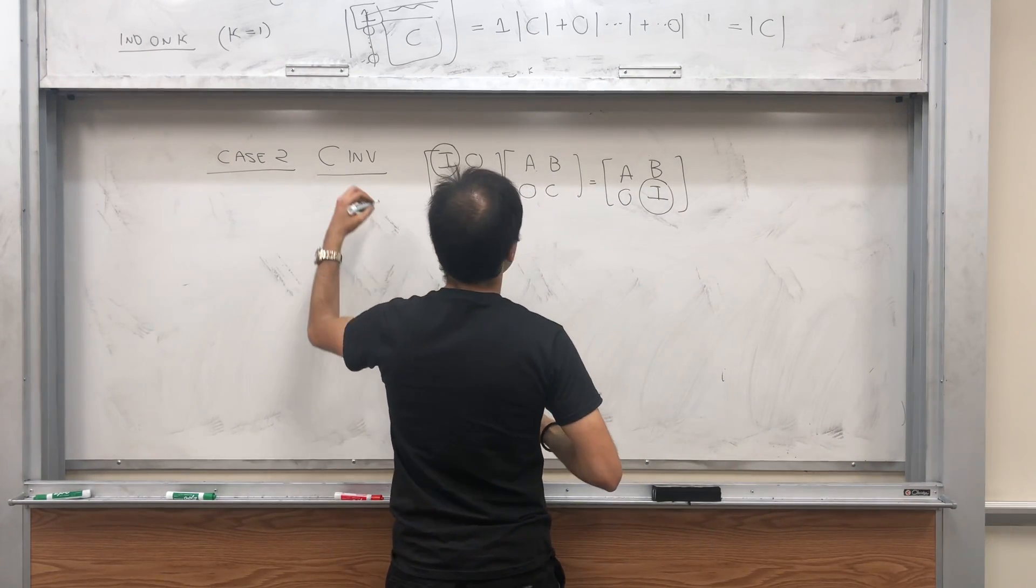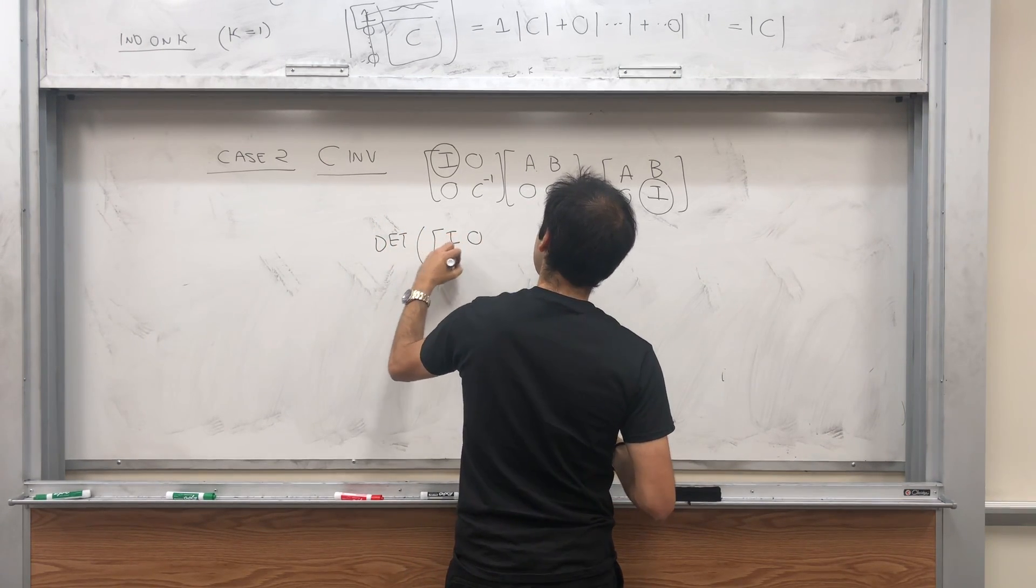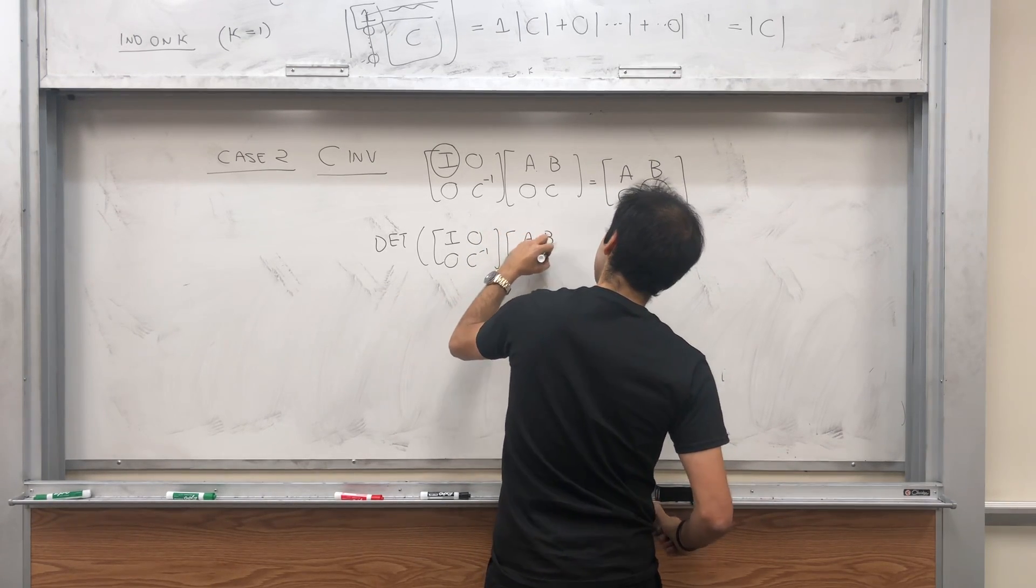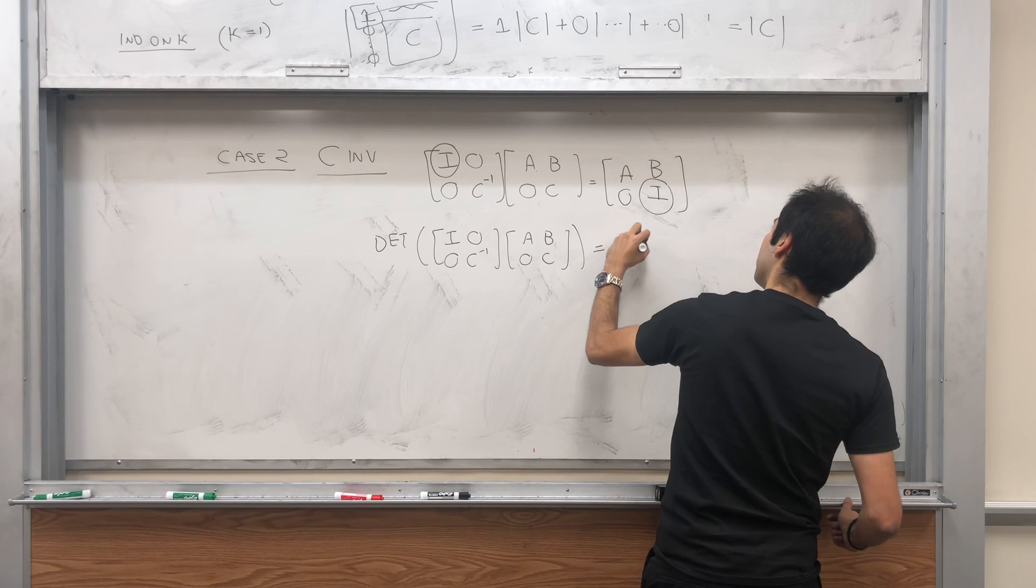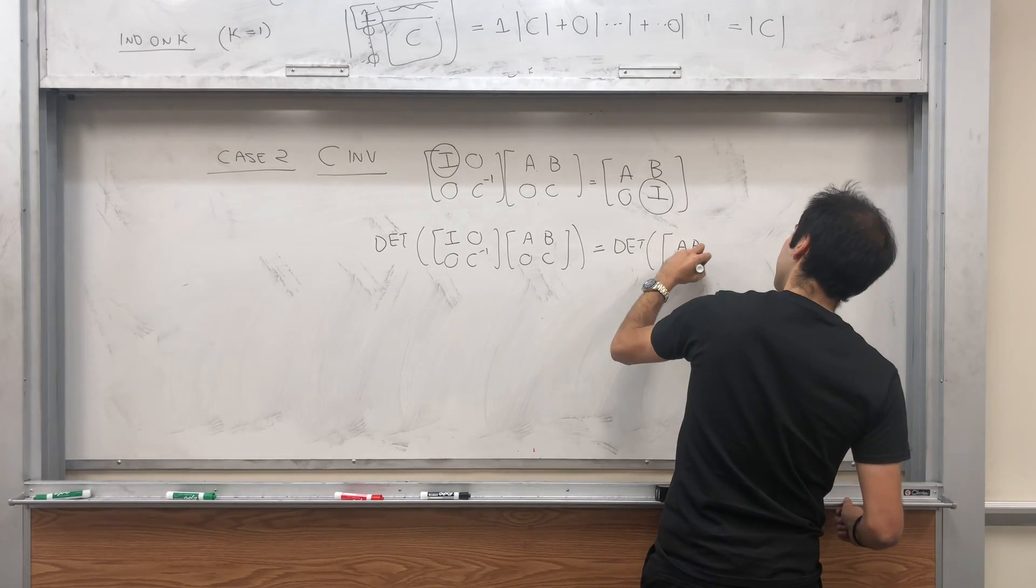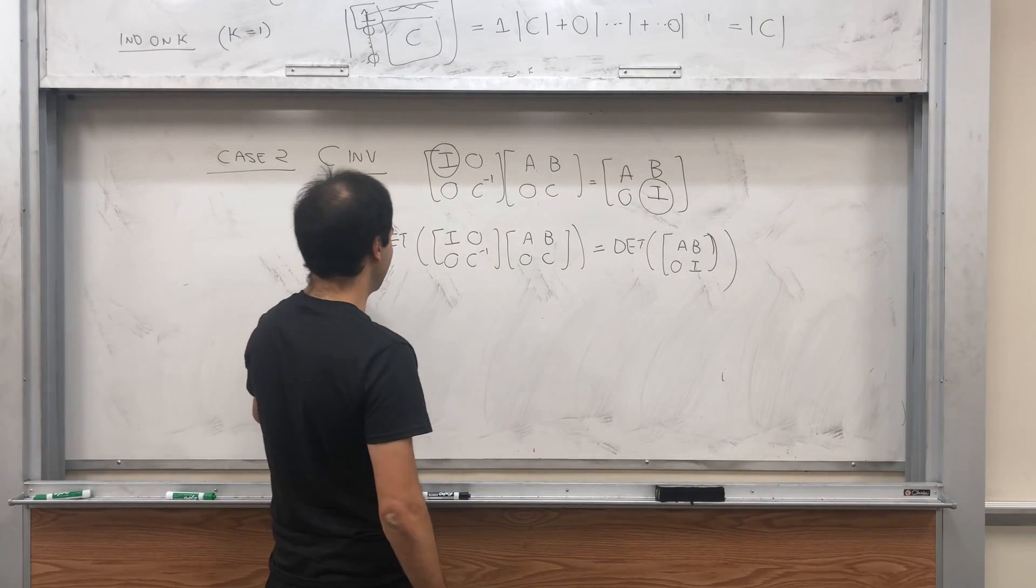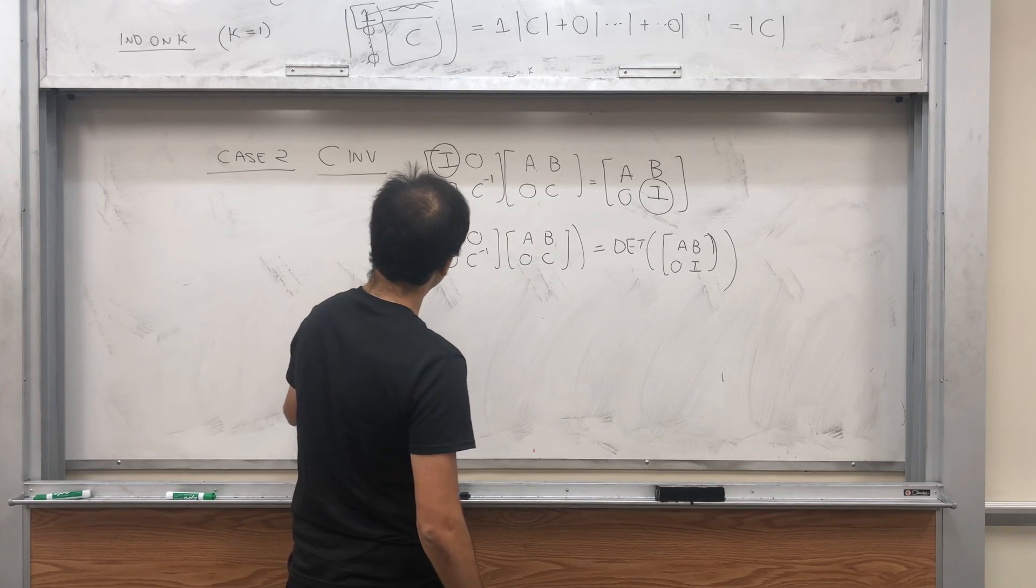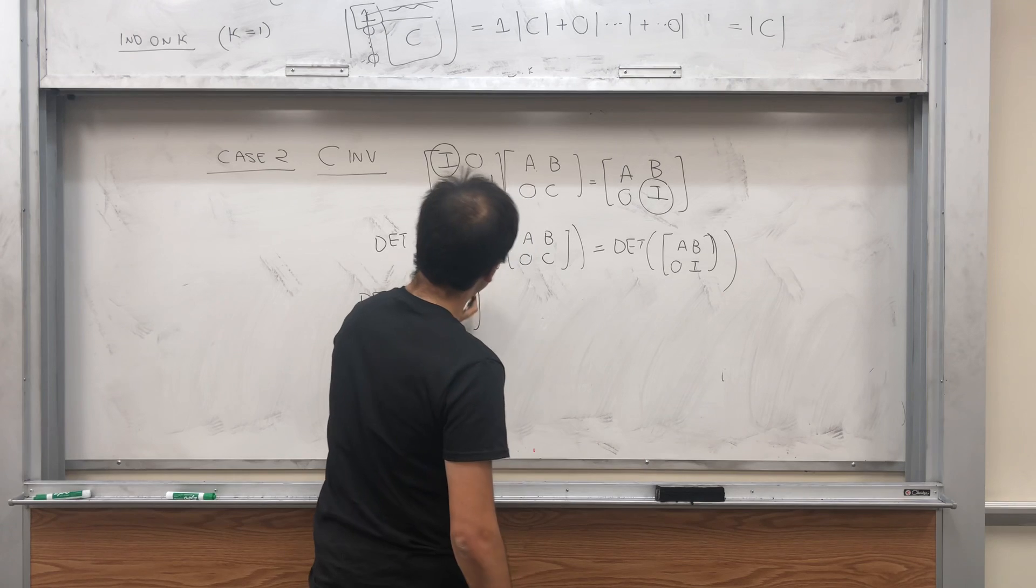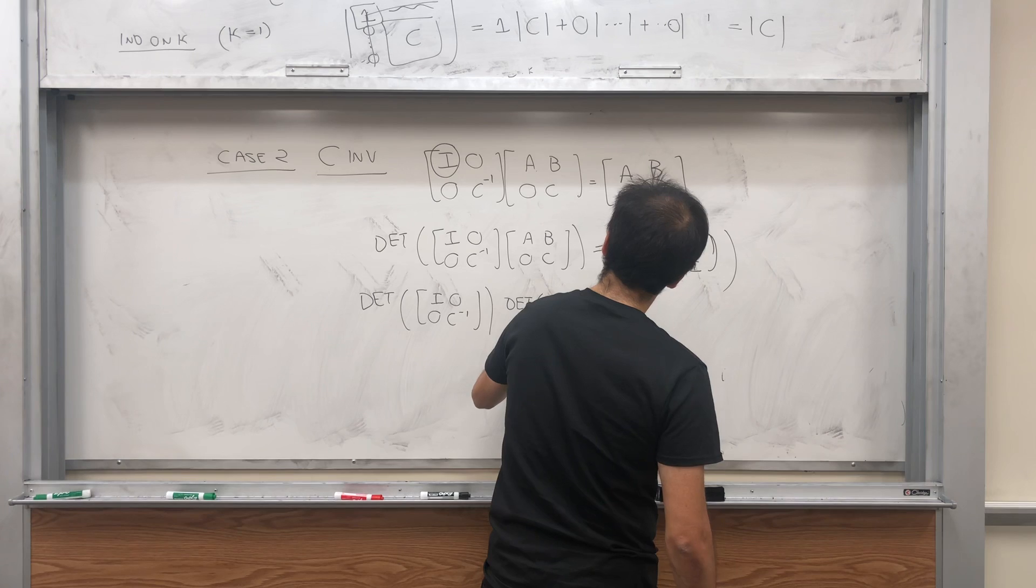So then determinant of [[I, 0], [0, C^{-1}]] times [[A, B], [0, C]], that's the determinant of [[A, B], [0, I]]. Now determinants are multiplicative, so that's not a problem. So det([[I, 0], [0, C^{-1}]]) times det([[A, B], [0, C]]).